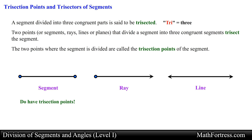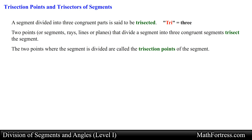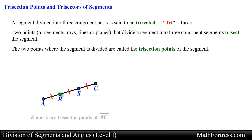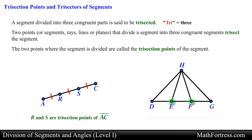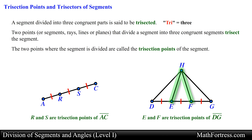This means that rays and lines do not have trisection points. In the following figure, segment AR is congruent to segment RS, which is congruent to segment SC. From this we can conclude that point R and point S are trisection points of segment AC, meaning segment AC is trisected by points R and S. In the next figure, if point E and point F are trisection points of segment DG, then segment DE is congruent to segment EF, which is congruent to segment FG. We can also conclude that segments HE and HF are trisectors of segment DG.